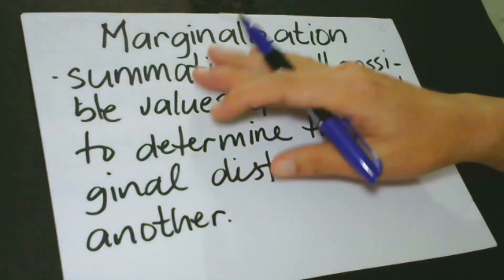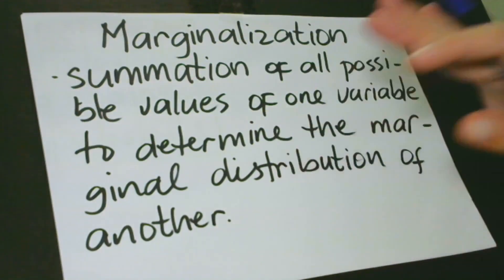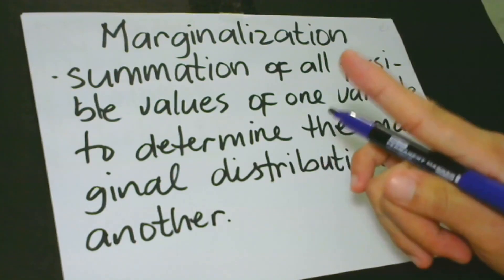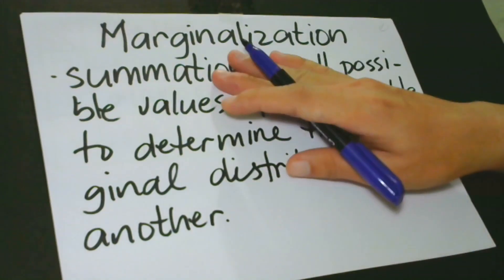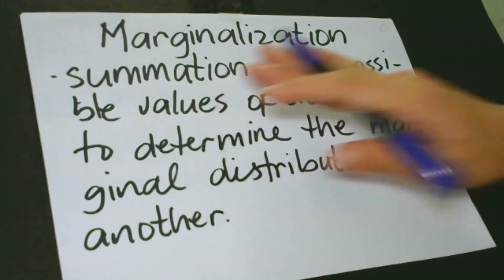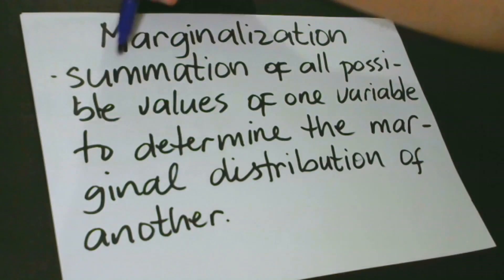Marginalization is a method that requires the summation of all possible values of one variable to determine the marginal distribution of another. The word that you have to remember when talking about marginalization is its root word. The root word is margin.